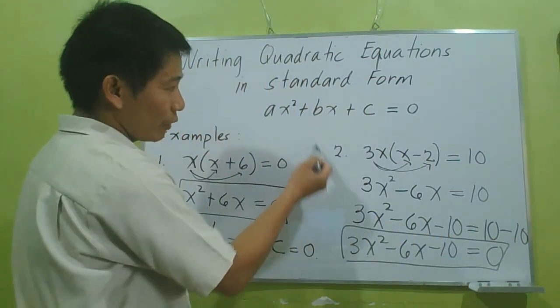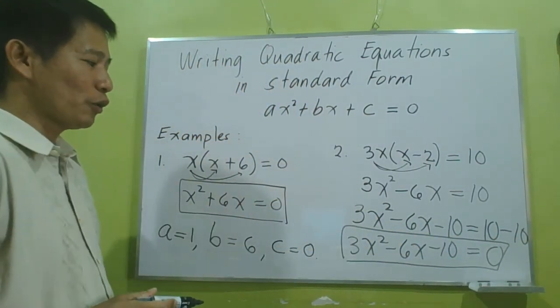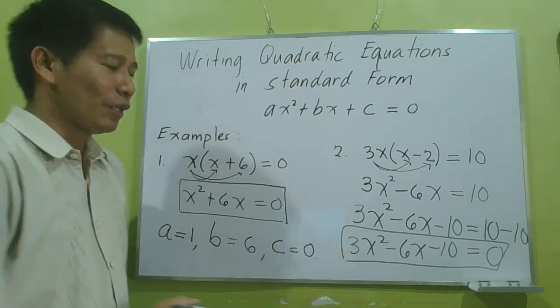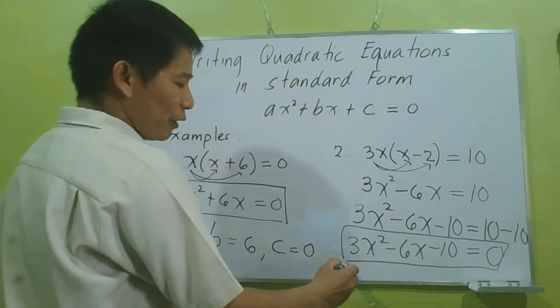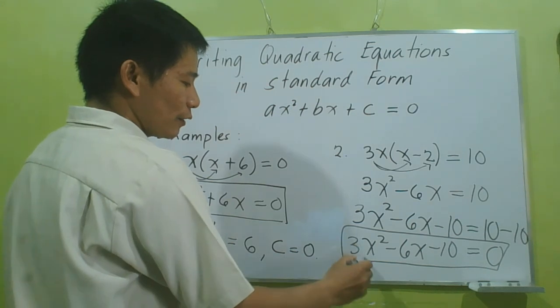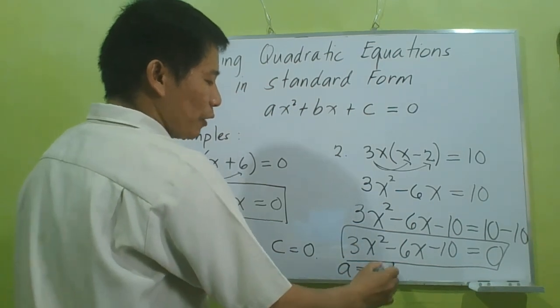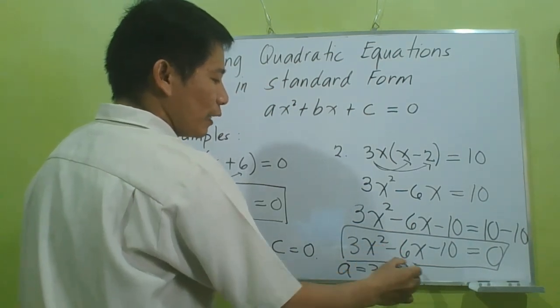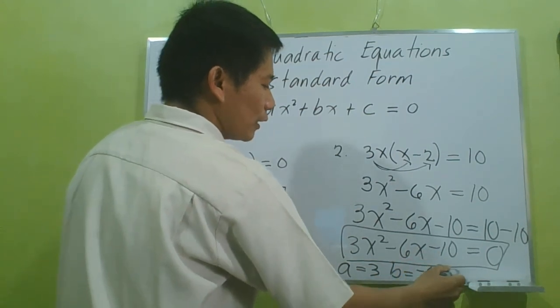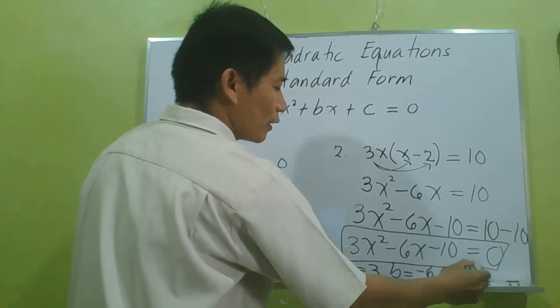What is the value of A here? Clearly, our A here is 3. Our B is negative 6, and our C is negative 10.